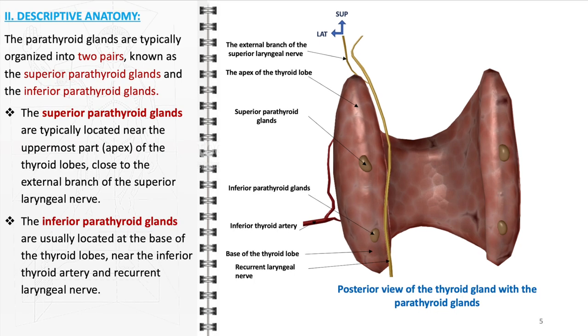On the other hand, the inferior parathyroid glands are typically found at the base of the thyroid lobes. Their proximity to the inferior thyroid artery and the recurrent laryngeal nerve is significant.